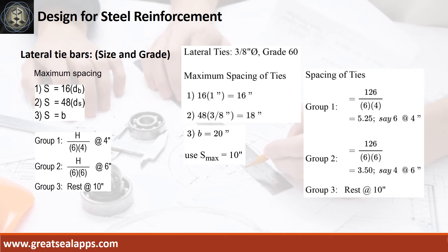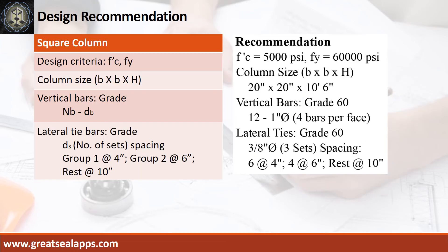Follow the given computations for lateral ties. Design recommendation as follows: f'c equals 5,000 PSI, fy equals 60,000 PSI, column size is 20 inches by 20 inches by 10 feet 6 inches, vertical bars of grade 60 — 12 pieces of 1 inch diameter bar, lateral ties of grade 60 — 3/8 inch diameter bar, 3 sets spacing: 6 at 4 inches, 4 at 6 inches, rest at 10 inches.